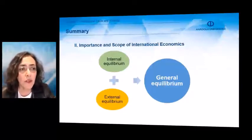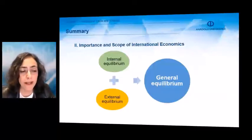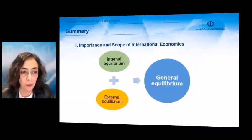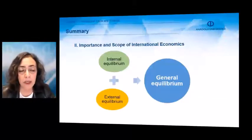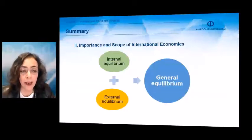About the importance and scope of international economics, I would like to mention general equilibrium first. General equilibrium is set by the internal equilibrium and external equilibrium. The concurrent equilibrium both in internal and external gives us the general equilibrium. Internal equilibrium is the equilibrium set in the monetary markets and the commodities market. External equilibrium is the equilibrium in the international transactions. Both of them come together and give us the general equilibrium of an economy.